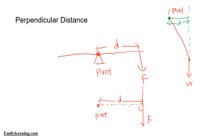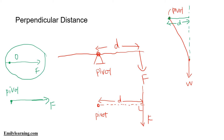What if the pivot lies directly on the line of action of the force? In that scenario, the perpendicular distance from the pivot to the force is zero. If you extend the line of the force and it passes through the pivot, the perpendicular distance is zero, meaning that force produces no moment about that pivot.